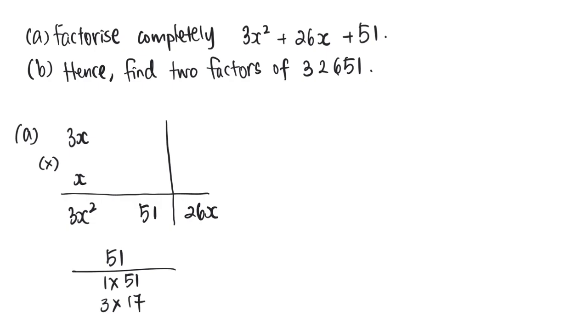So there's actually only these two possible pairs. And looking at 26, then I know that I could select this pair because 3x times 3 will give me 9x here. x times 17 is 17x, and 17x plus 9x does give me back my 26x.